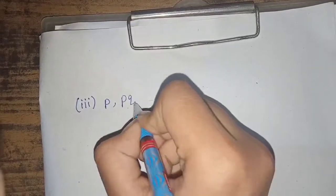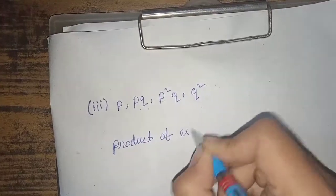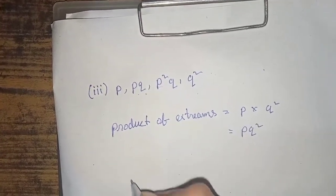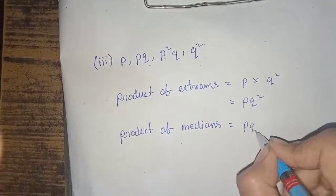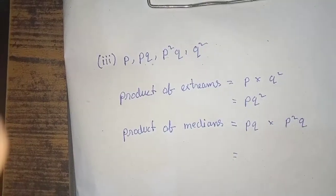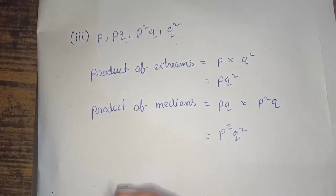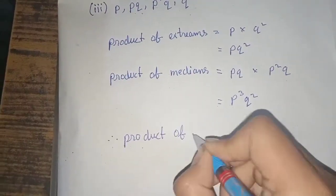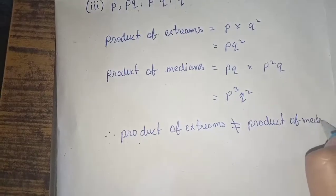Next, there is the set P, Q and P squared, Q. Product of extremes is P, R, Q squared. Product of medians is P, Q into P squared, Q. Therefore, product of extremes is not equal to product of medians. The set of numbers are not in proportion.